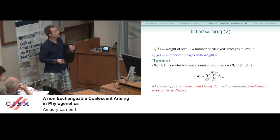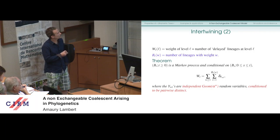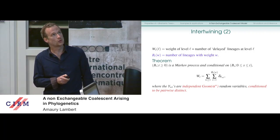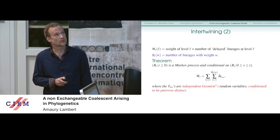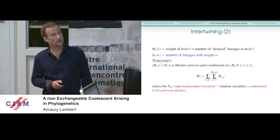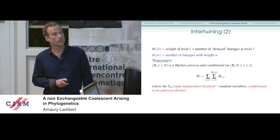We characterize the process by the number of lineages with each weight W, losing the information about levels but keeping the weights of lineages. B_T is a Markov process — ensured by an intertwining equality — and conditional on the knowledge of this configuration, the full configuration of levels can be obtained by independent geometric random variables conditioned to be pairwise distinct. So we can do much quicker inference from real trees if we know how to augment the data with the weights.